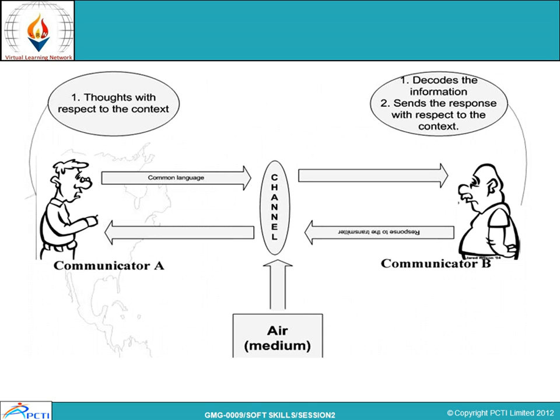This is another model of communication. Here you can see two communicators: Communicator A and Communicator B. Communicator A is talking in a common language — a language that Communicator B also understands. Communicator A has expressed their thoughts with respect to the context, with full presence of mind, and delivers the message through a channel to Communicator B. Communicator B decodes the message and the information, and forms their response in that context, then responds back through a channel.